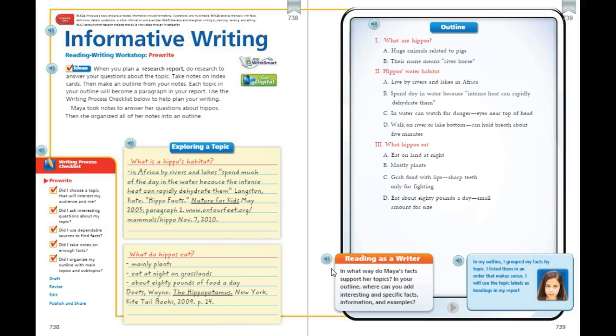You're going to work on that outline and begin to gather and categorize the information that you've gathered from print and digital resources, just like Maya did here on page 739. So you're going to take your information and you're going to plug it into an outline.